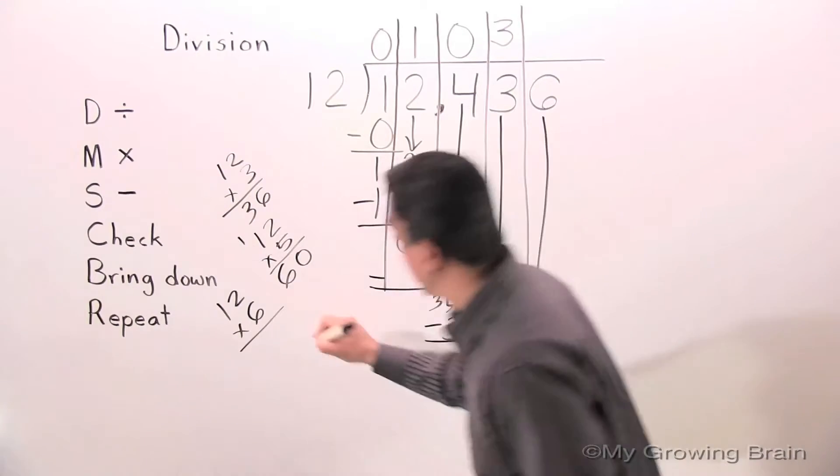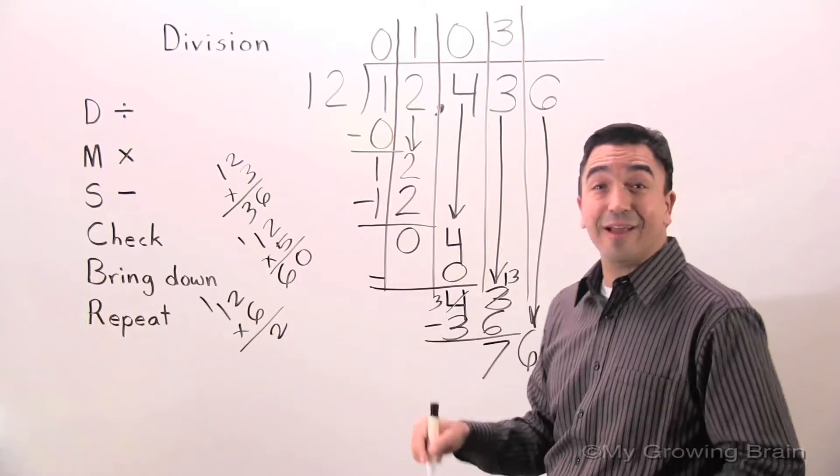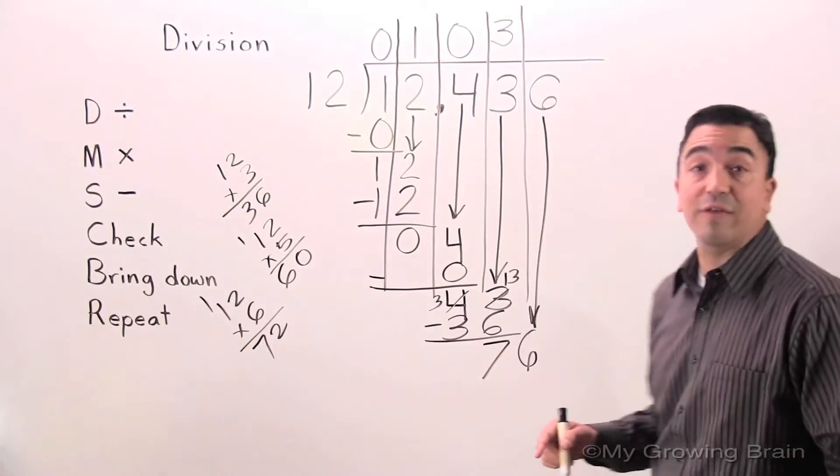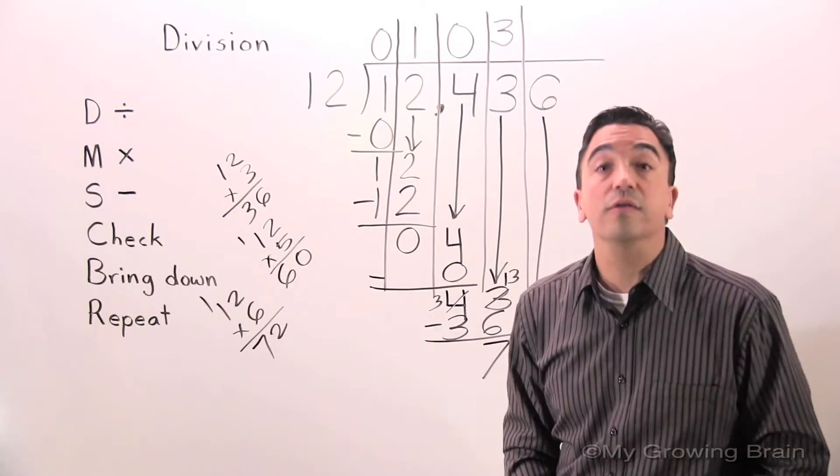6 times 2 is 12. Regroup the 1. 6 times 1 is 6, plus 1 is 7. 72. 72 is really close to 76. Therefore, 12 goes into 76 six times.